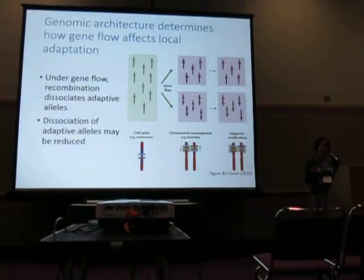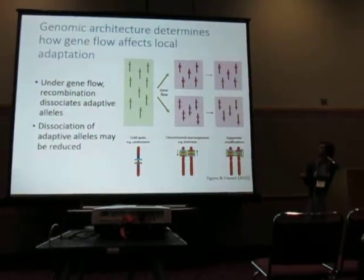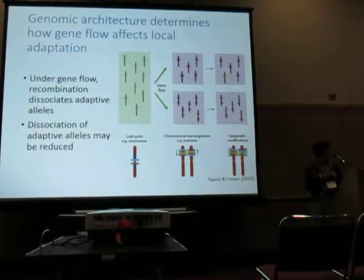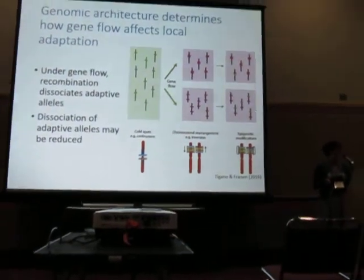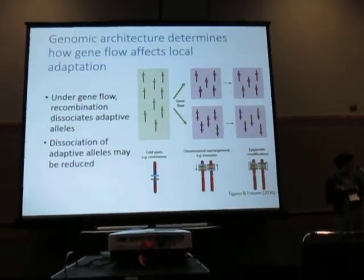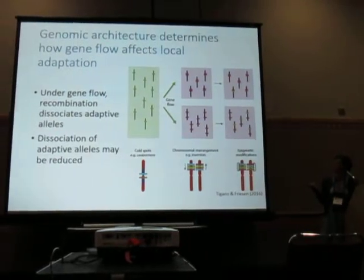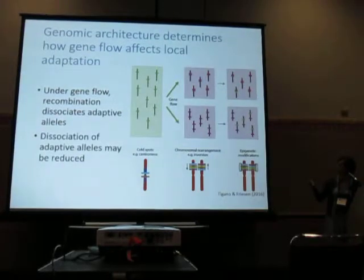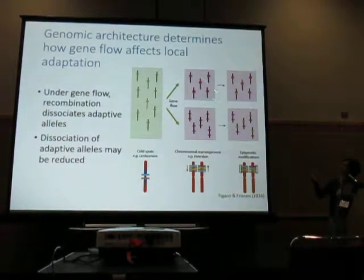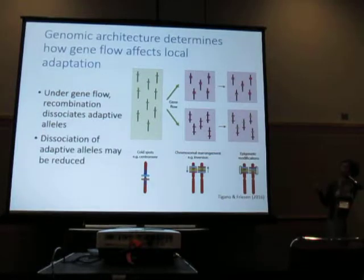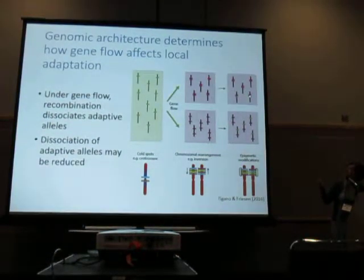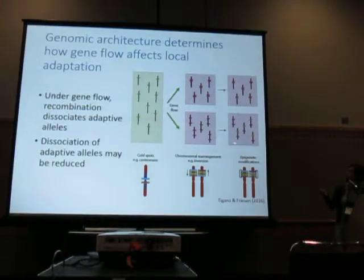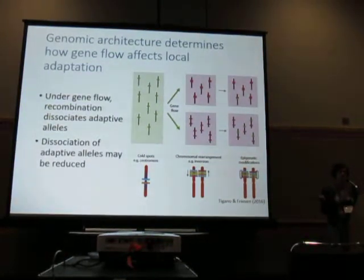Theory as well as empirical evidence tells us that genomic architecture determines how gene flow affects local adaptation. Under gene flow, recombination will dissociate adaptive associations between alleles. In this figure on the right, we have gene flow from a green population into a locally adapted pink population, and over time recombination will break down the associations between these locally adapted pink alleles, especially when the loci are not tightly linked.